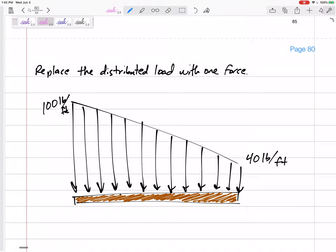I just think about this as a uniform 40 distributed load, right? A uniform 40 pounds per foot distributed load, and then a triangular distributed load.